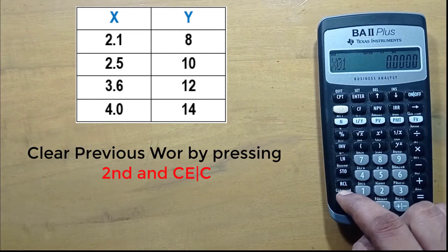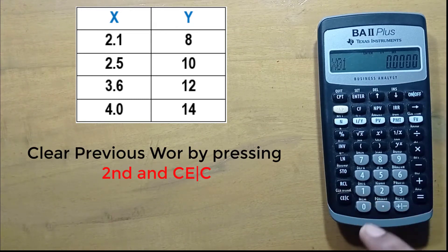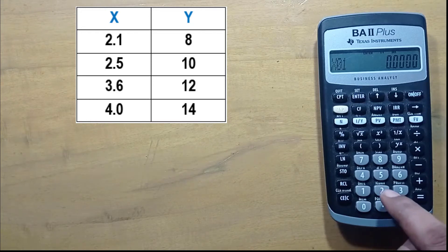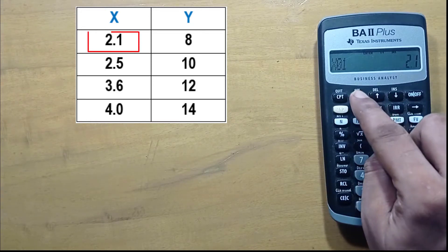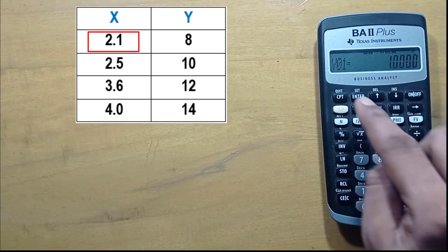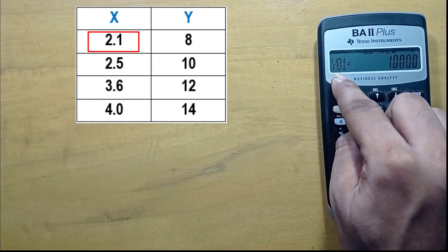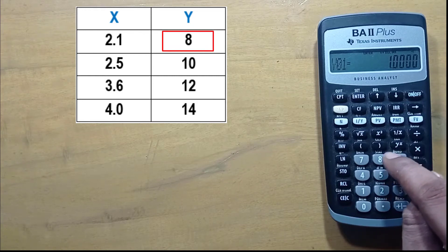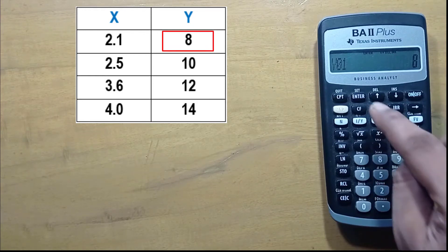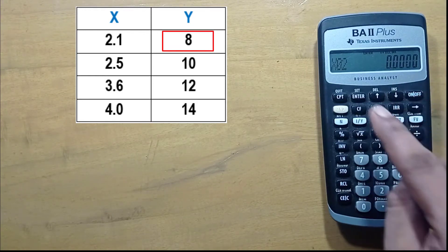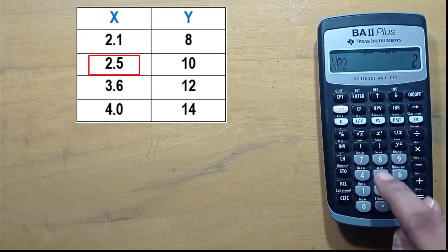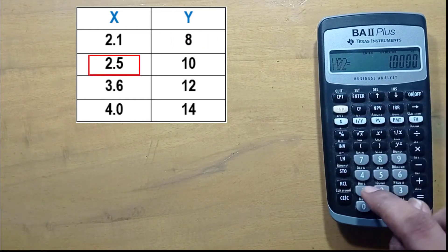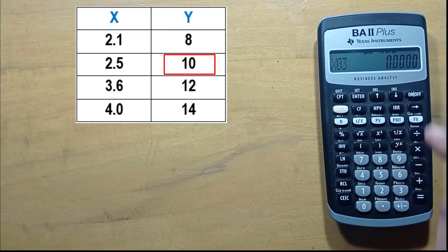Now we will input values: 2.1, enter, down arrow. Here we can see Y01 which is 8, so press 8, enter, down arrow. X02 which is 2.5, enter, down arrow, then continue entering the remaining values.